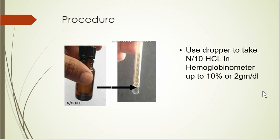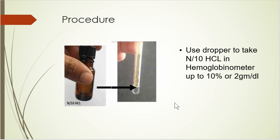Coming to procedure - how we'll estimate the concentration of hemoglobin. First of all, we have to take N/10 HCl into the hemoglobinometer tube. There are two markings on the tube - the lowest first marking is 10% and 2 g/dL. Till that minimum mark, we have to fill N/10 HCl.